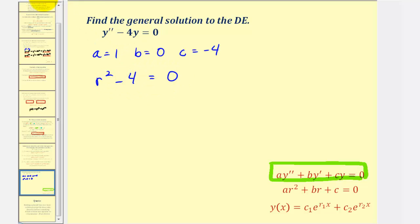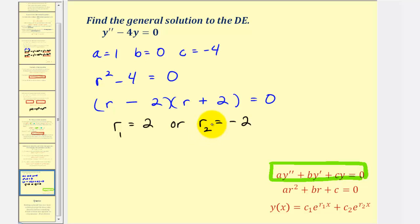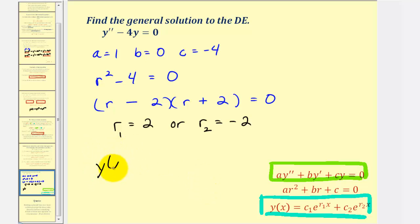Now we'll solve this for r. Notice how we have a difference of squares, so this factors nicely. The factors of r squared are r and r; factors of four are two and two. One binomial is a sum and one is a difference: r minus two times r plus two equals zero. So r minus two equals zero when r equals two — let's call this r sub one. And r plus two equals zero when r equals negative two — let's call this r sub two. Now that we know the values of r, and notice how we have two distinct real roots, the general solution is y of x equals c sub one times e to the power of two x, plus c sub two times e to the power of negative two x.